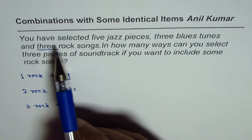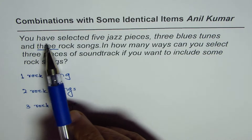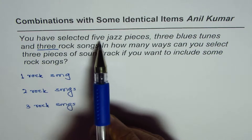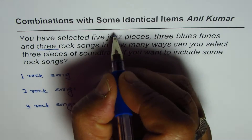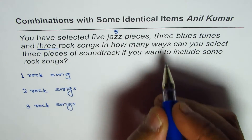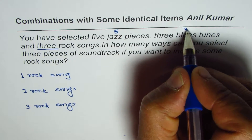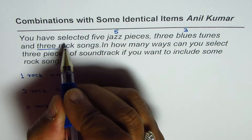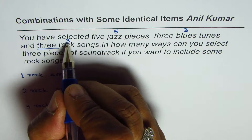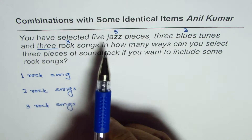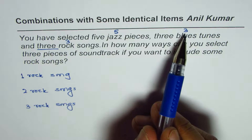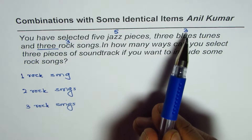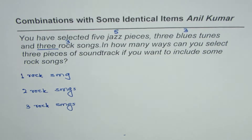Now let's get back to the question. We have selected five jazz pieces, three blues, and three rock. So in all we have five plus three is eight, and eight plus three is eleven.